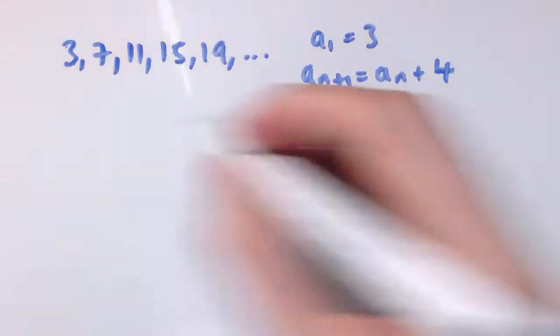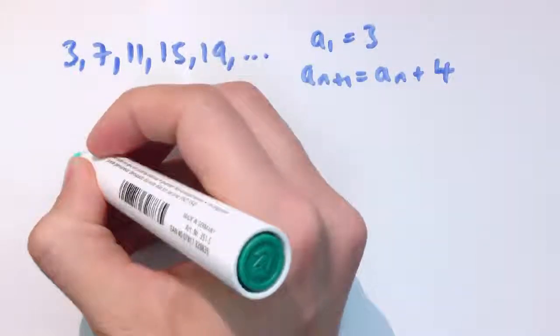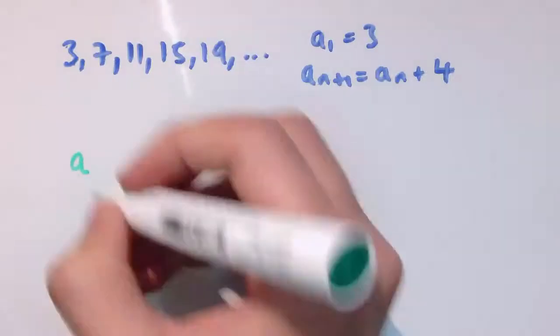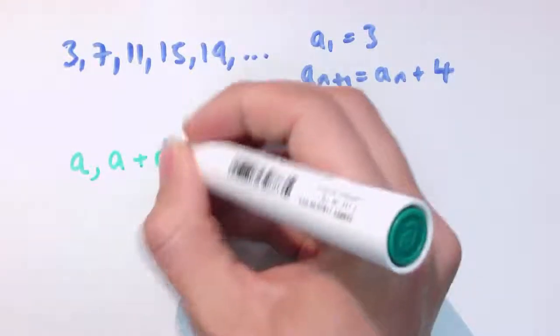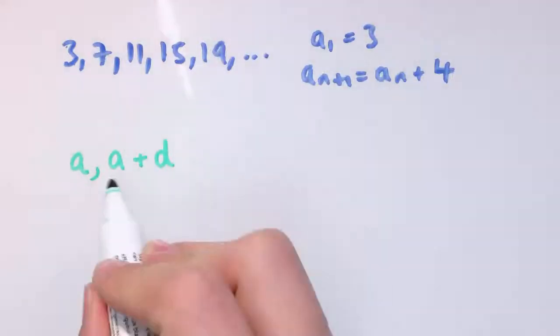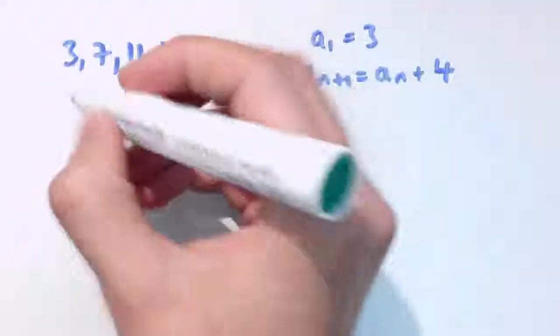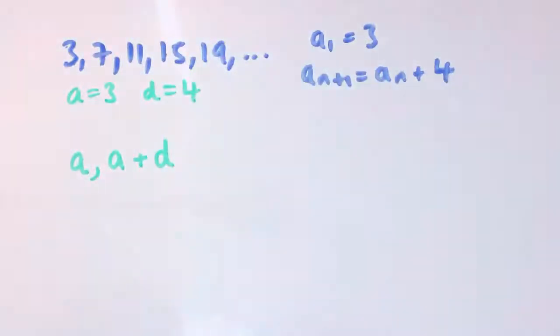If my sequence started at a number, let's just call it a—well that's here, in this sequence a would be 3—and then arithmetic progressions work by adding on a number each time. So if I add on d, my next number is a plus d. In this sequence we've got a equals 3 and d equals 4.